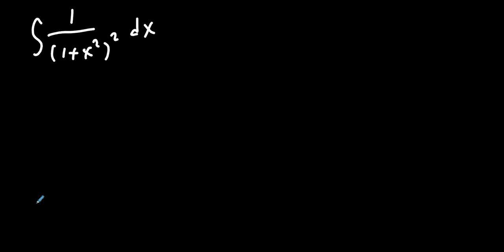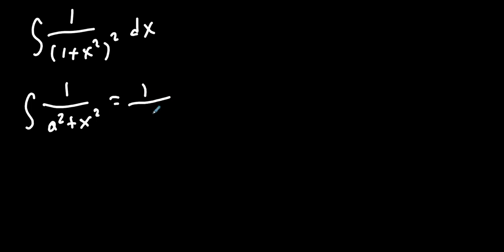So let's continue on to the video. We have this integral: one over (one plus x squared), all squared, dx. This looks very similar to the known integral in general form: the integral of one over (a squared plus x squared) equals one over a times arctan of x over a. That's the general form.